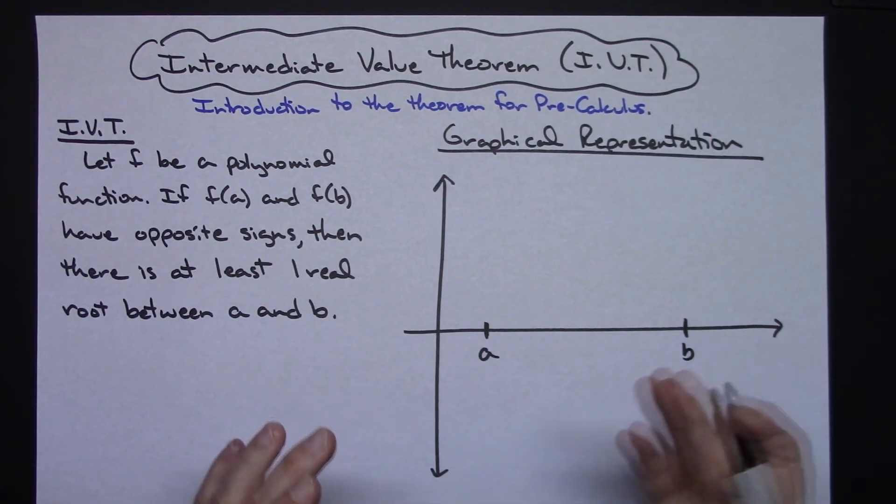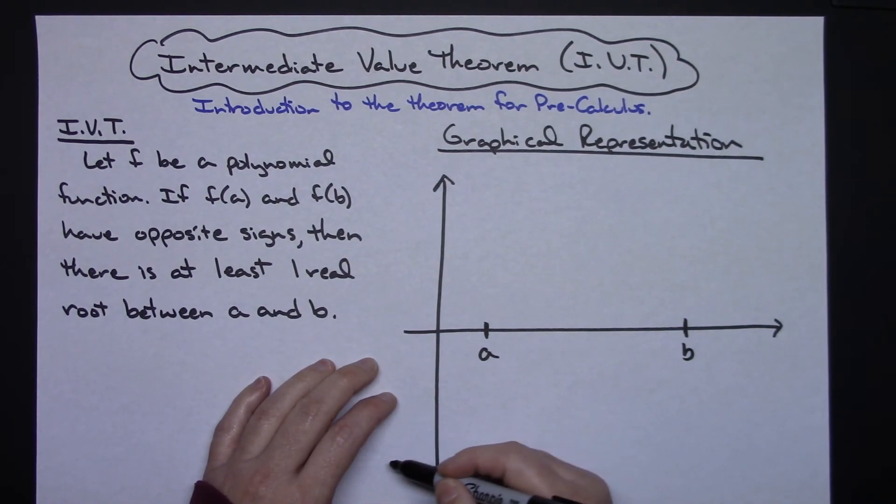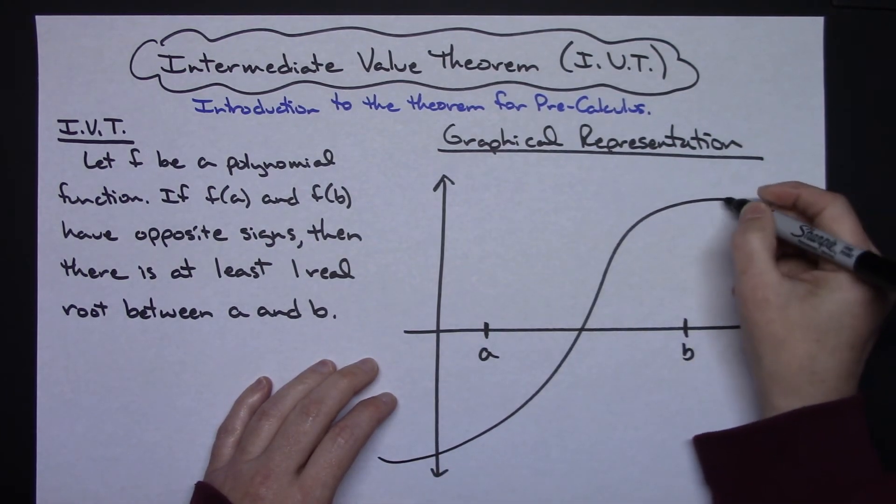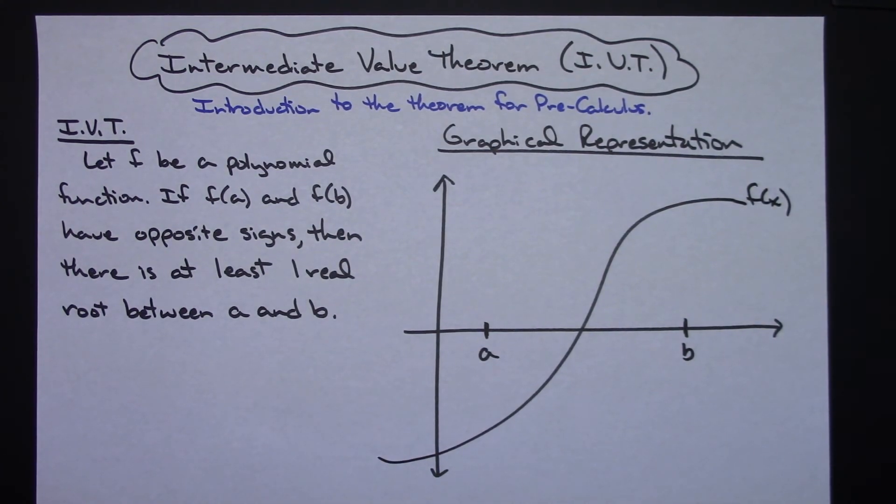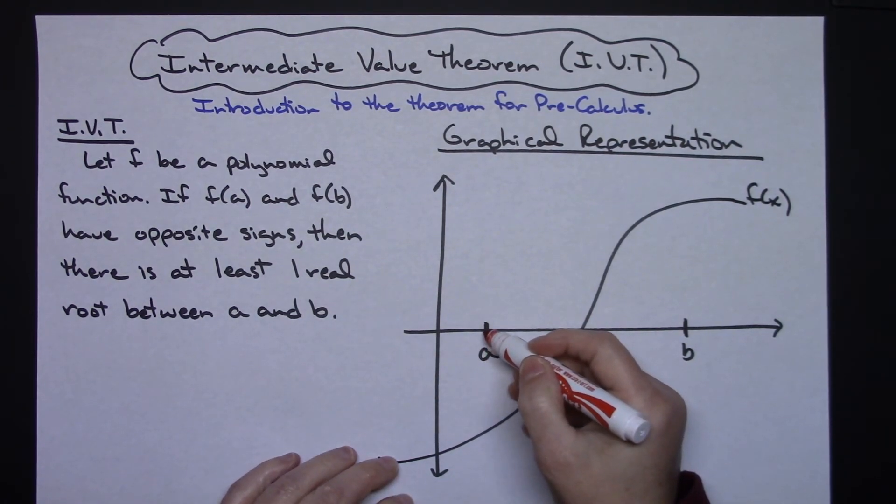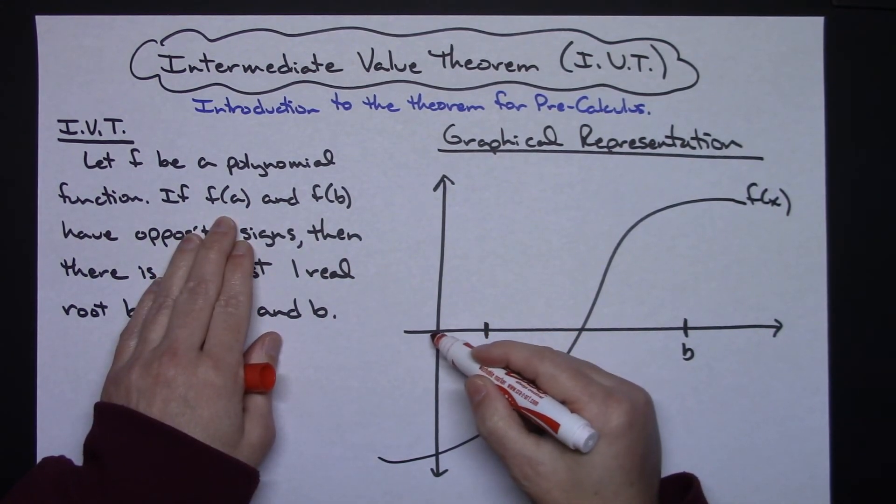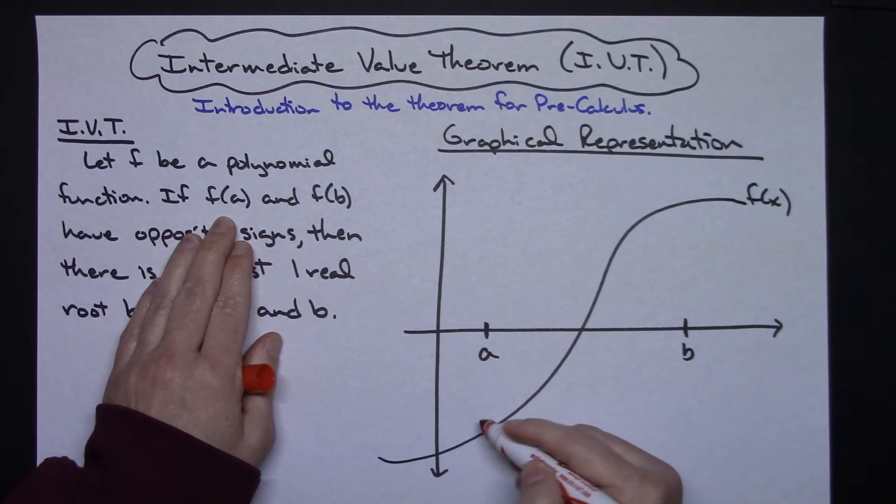So in this interval, let's say I've got a random polynomial curve like such. We'll call this our F of X. The way I have chose to draw this right here...